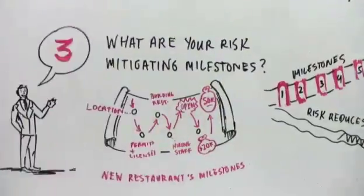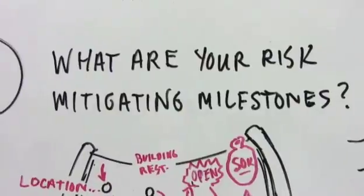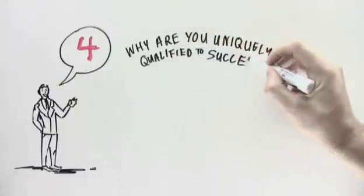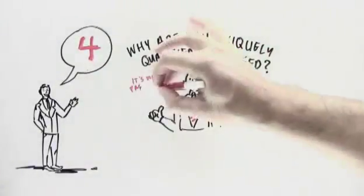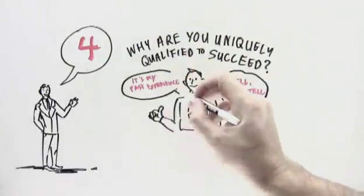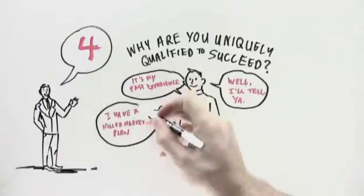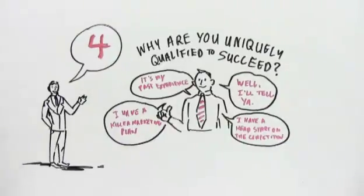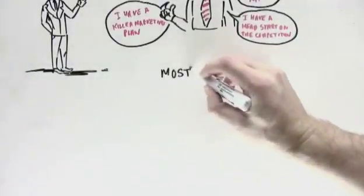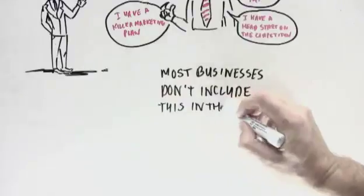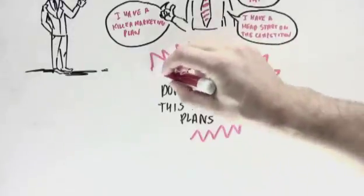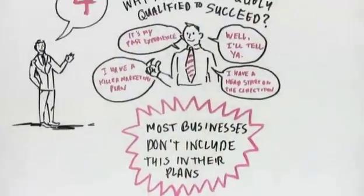So to reiterate, the third key question that you must answer in your business plan is, what are your risk-mitigating milestones? Now, the fourth key question that you must answer in your plan is, why are you uniquely qualified to succeed? Maybe it's that your past experiences will allow you to run the company really well, or maybe you have a killer marketing plan that you put together, or maybe you have a head start on your competitors. There could be a bunch of reasons why you are qualified to succeed, so include them in your business plan, since this is the most important thing that readers care about. And most business plans don't even include this information. So once again, why are you uniquely qualified to succeed? It's the most important part of your plan, and most, I'd say 90-plus percent of business plans don't include that critical information.